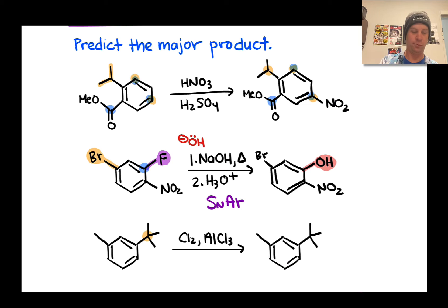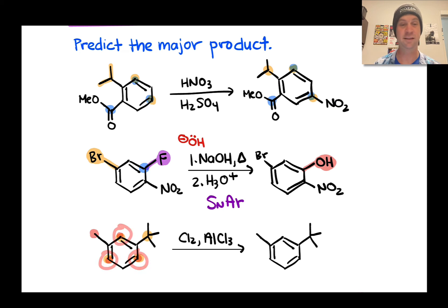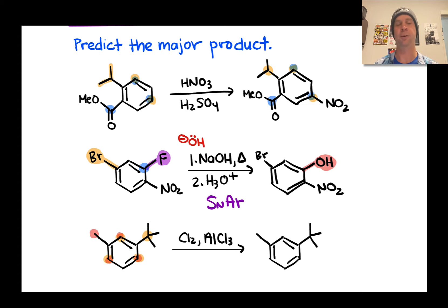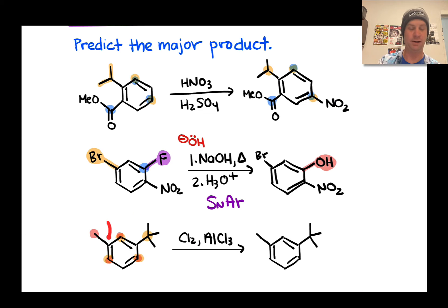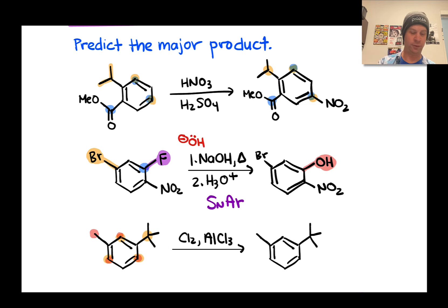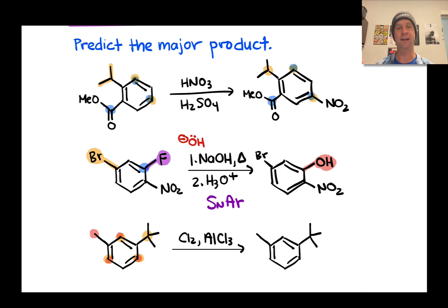All three reinforced positions are structurally distinct, giving rise to three possible constitutionally isomeric aryl chloride products. We can rule out the position ortho to both the methyl and tert-butyl groups — it's sterically crowded since tert-butyl is very large and methyl adds further crowding. The tert-butyl group also sterically shields the position ortho to itself, greatly slowing electrophilic attack at those ortho carbons.